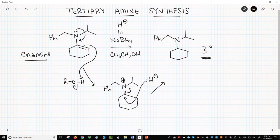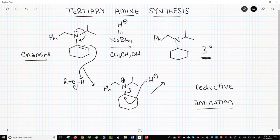You can also reduce enamines with hydrogen and palladium on carbon. This overall process, make an enamine and reduce it to an amine, is another example of a reductive amination. Let's see this reaction in context.